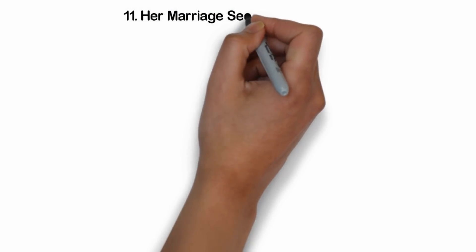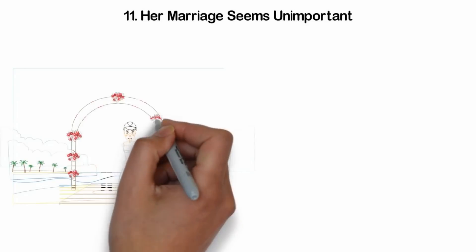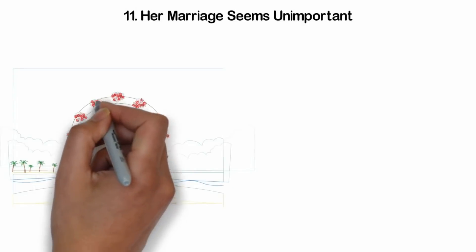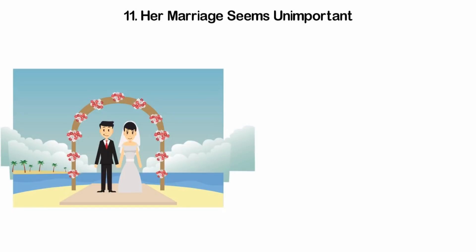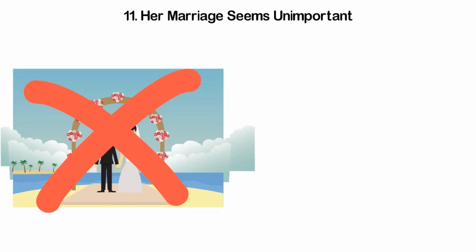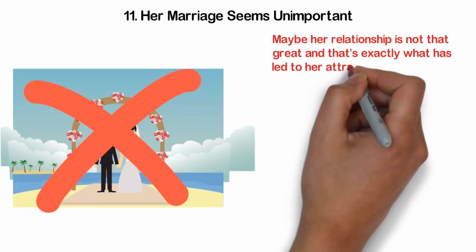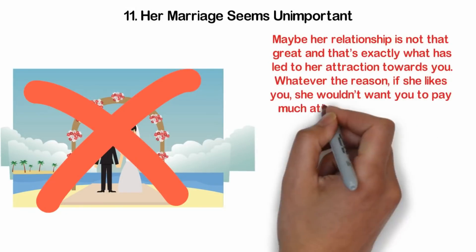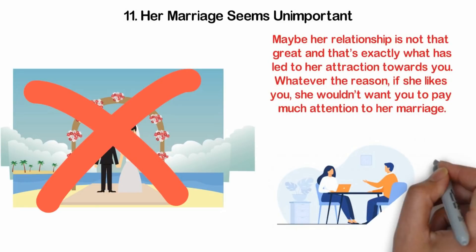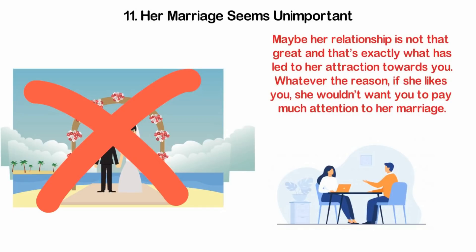11. Her marriage seems unimportant. If you are around and you see her trying to act like her marriage is not that important, those are some obvious signs. She either tries to change the subject, or when she talks about her husband, makes the relationship as uninteresting as possible. Either she is just facing some serious issues with her husband, or she doesn't want you to think they are good together. It could also be just both. Maybe her relationship is not that great, and that's exactly what has led her attraction towards you. Whatever the reason, if she likes you, she wouldn't want you to pay much attention to her marriage. In front of you, she wants to be available. And talking about her husband and the constant reminder that she is married is not exactly supposed to help with that.